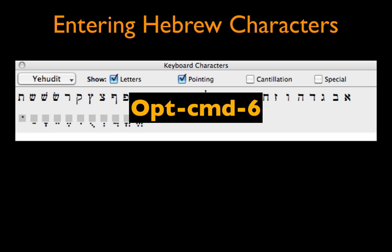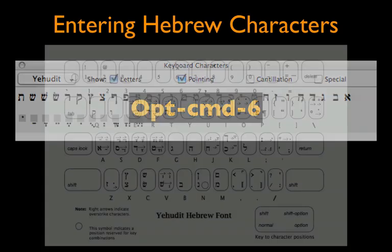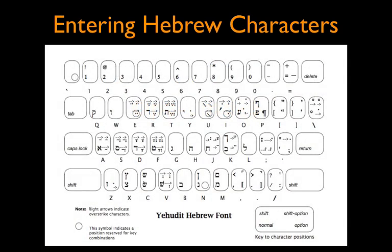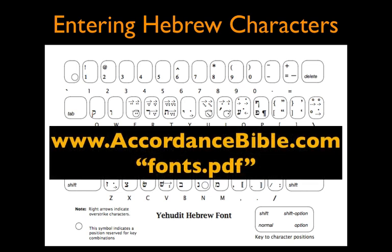You can also enter Hebrew directly from your keyboard. Here's a keyboard map to guide you. If you've installed Accordance from a disk rather than downloading it, you probably already have this on your computer. Otherwise, you can download it directly from the Accordance website — just search for 'fonts PDF.' The file contains keyboard layouts of all of the Accordance fonts.